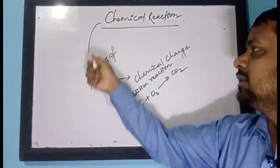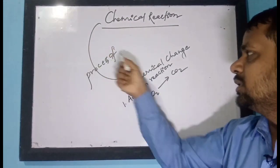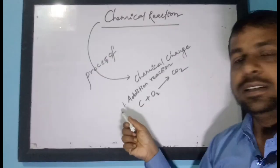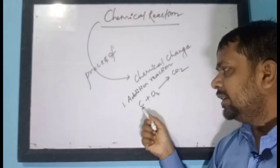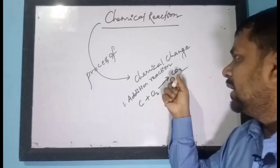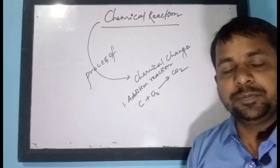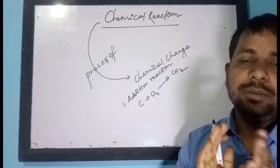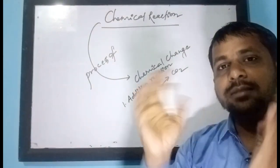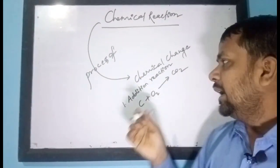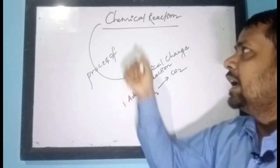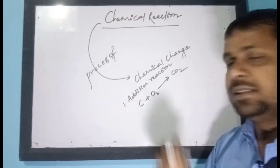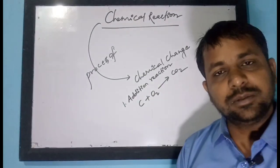So a chemical reaction is a process of chemical change that takes place by the addition of atoms or molecules to form a larger molecule. If addition is taking place between atoms or molecules and larger molecules are formed, that is one type of chemical reaction called addition reaction, also known as synthetic reaction.